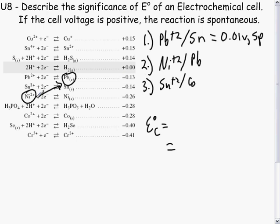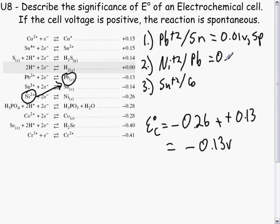To double check, we have our reduction at negative 0.26 minus negative 0.13, our oxidation, and our final answer is negative 0.13 volts. And since it is negative, it is non-spontaneous.